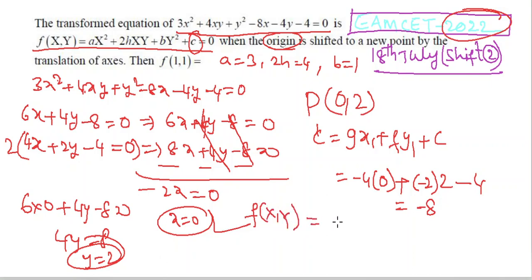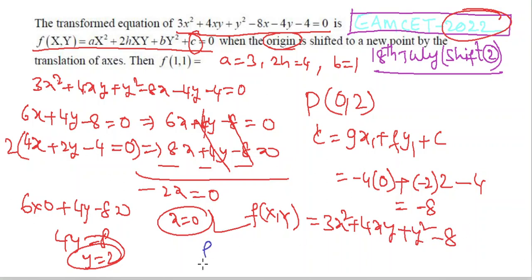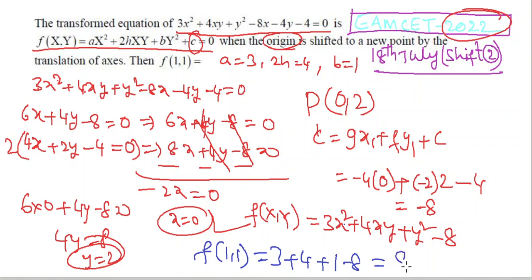The transformed equation is F(x, y) = 3x² + 4xy + y² − 8. Computing f(1, 1) = 3(1)² + 4(1)(1) + (1)² − 8 = 3 + 4 + 1 − 8 = 8 − 8 = 0. Therefore f(1, 1) = 0.